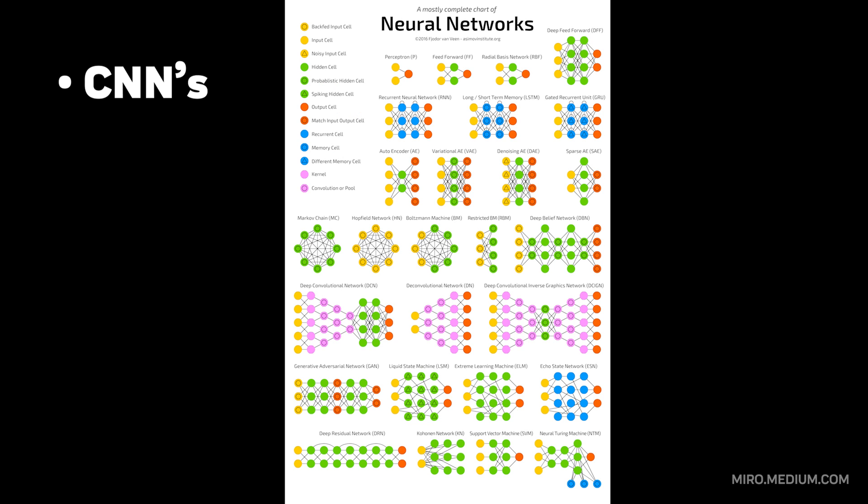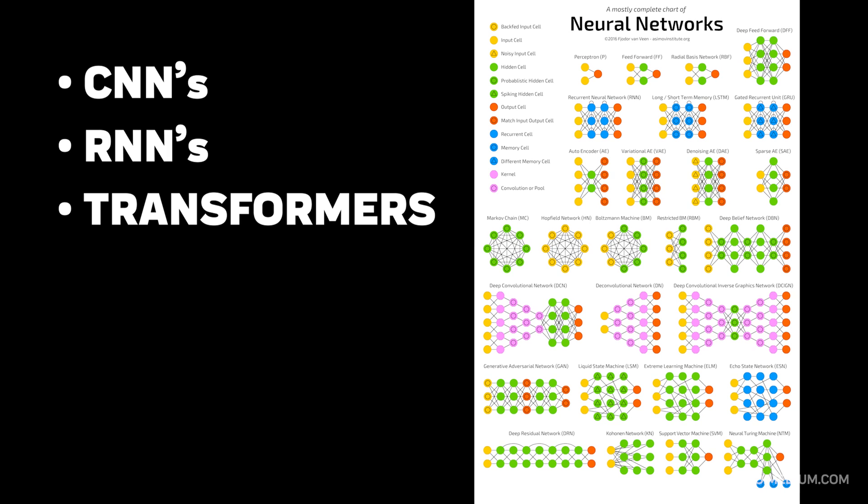Modern neural networks come in many flavors. Convolutional neural networks excel at image processing, recurrent neural networks handle sequential data, and transformers have revolutionized natural language processing. Each architecture is specialized for different types of problems, but they all share the same fundamental principle of learning from data.